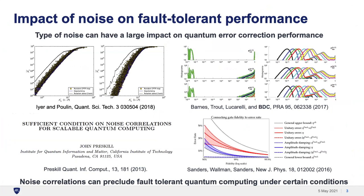This whole talk is about noise. Obviously for NISQ machines it's a big deal, but it's also critical for future fault-tolerant machines. We know that the type of noise on your system can have a large impact on quantum error correction performance. Work by Preskill in the early 2000s showed how noise correlations impact scalable quantum computing.